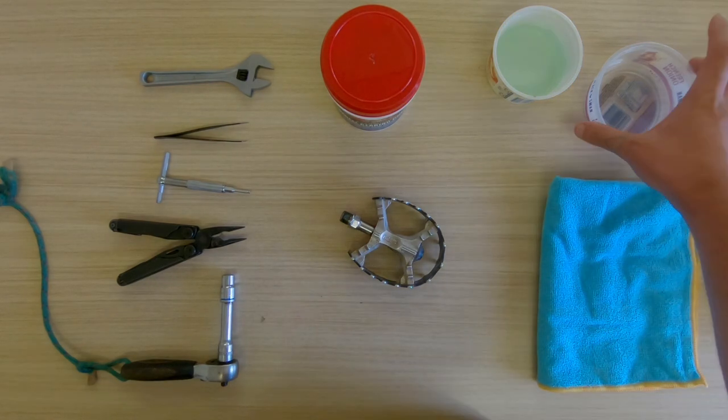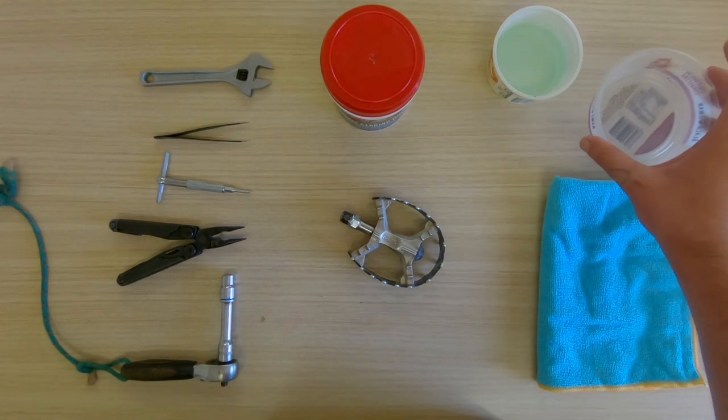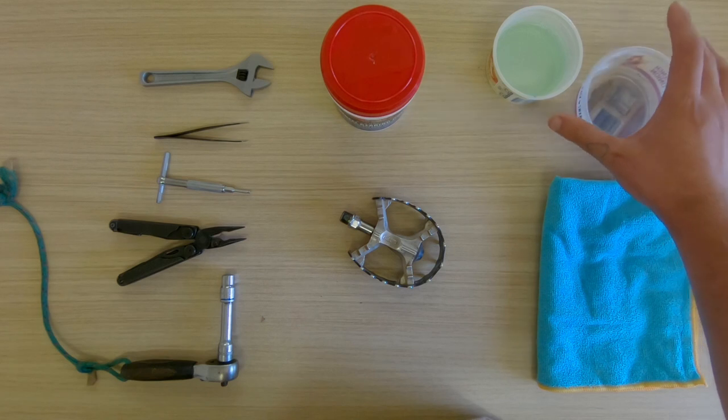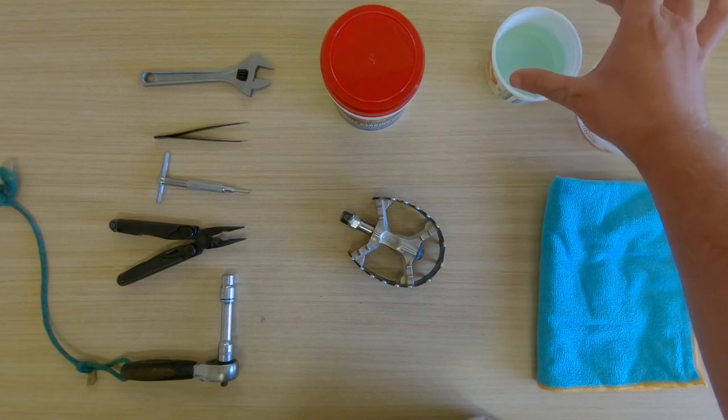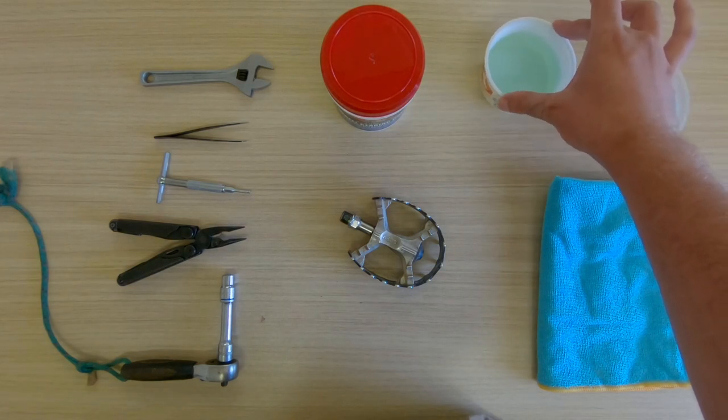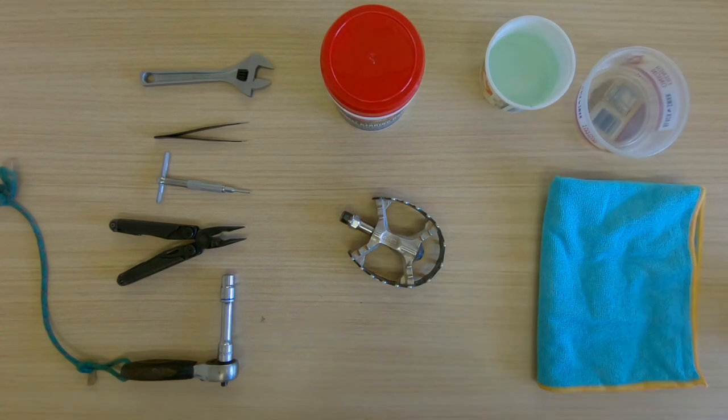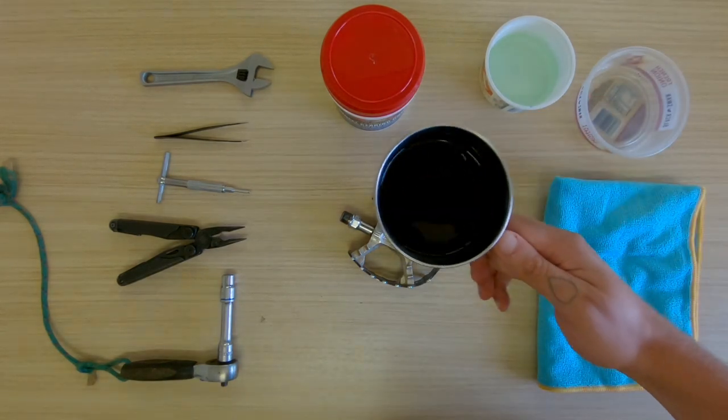Big tub of grease or a little tub of grease for that matter, rags, I like having a little plastic tray to put all the bits in so I don't lose them, some sort of detergent or degreaser, and coffee.